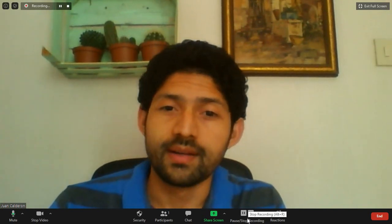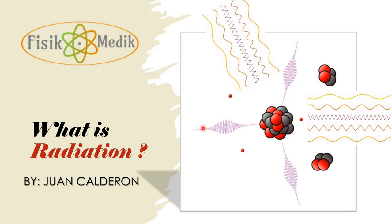Hello, welcome to your medical physics channel. Today is a very special day because we start a great series named Radiation Physics and Dosimetry. The topic today is: what is radiation? In the image you can see an atomic nucleus with protons and neutrons, an alpha particle, a very energetic photon — a gamma ray — and some electromagnetic waves of lower energy.